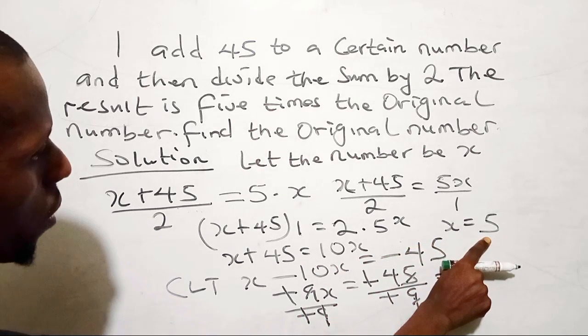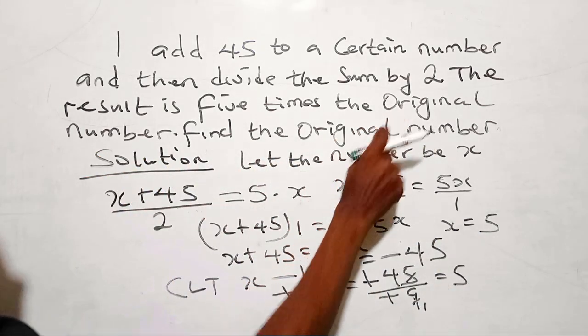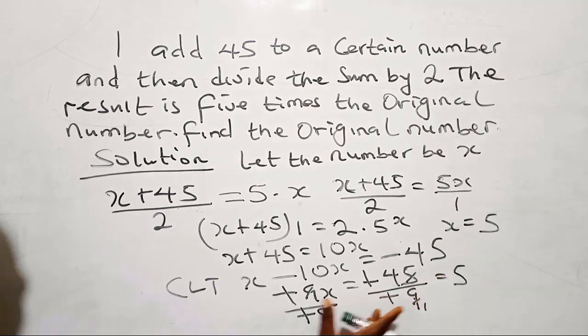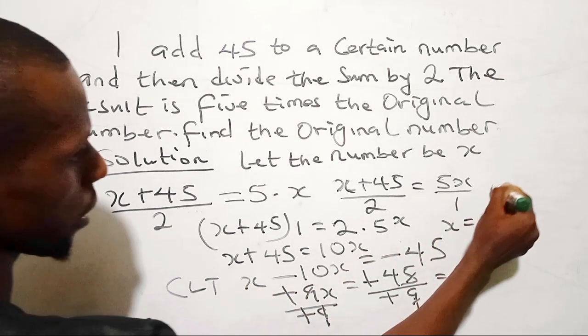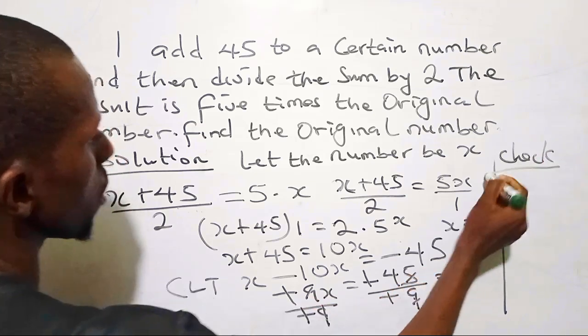So x equals 5, which is the original number. So how do we verify this to know whether we are correct or we are wrong? We can verify this by checking.